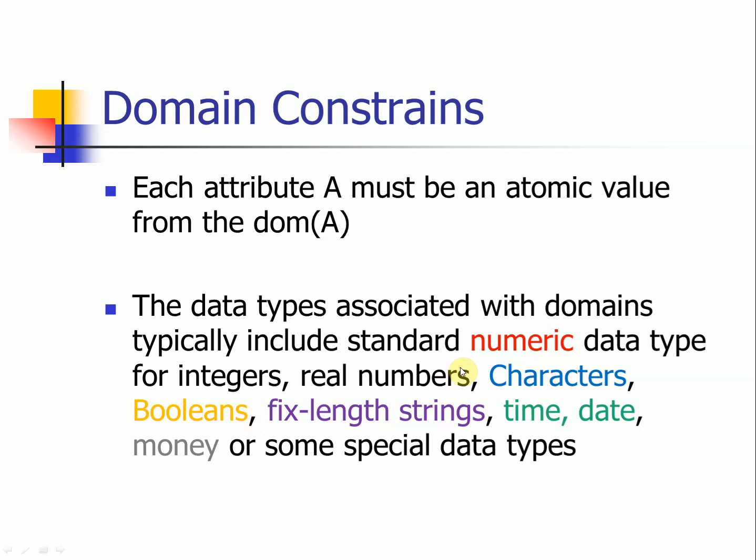While we define each data type, we also need to associate how many spaces of that data type we need to reserve. For example, if we are looking at the integer, we need to specify not only the integer but three digits of integer or five digits of integer. When we define that number — five digits, three digits — we define the domain of that attribute. The same thing applies to money, boolean, fixed length strings, etc.